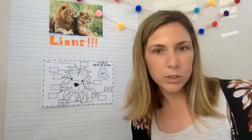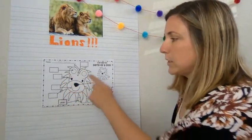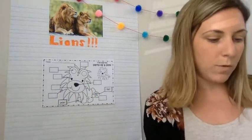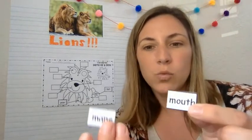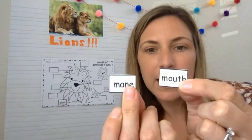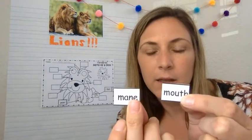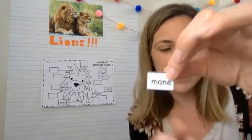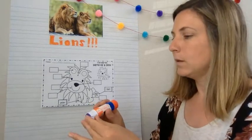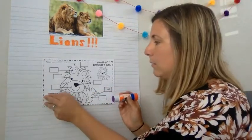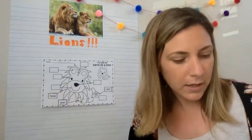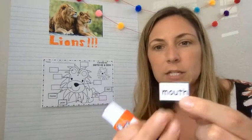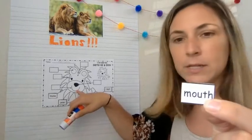All right what else do we know for sure? Oh we talked about his mane was pointing to the male lion's mane so we're going to put mane over here but I see two M ones so we need to figure out which one is it mane. Which one is it, can you point? This one, you're right it is this one M-A-N-E mane. All right that means this other M one must be his mouth M-O-U-T-H mouth so we'll put it right here pointing to the mouth.